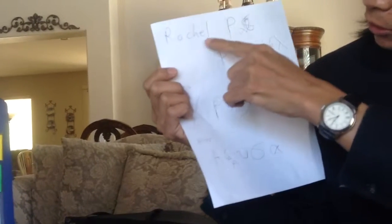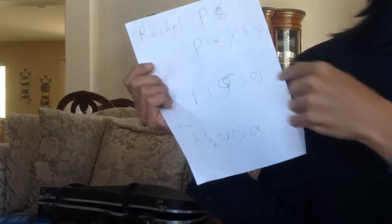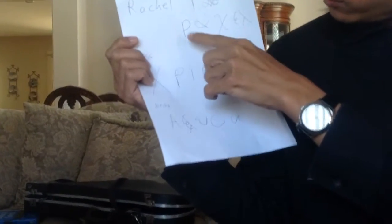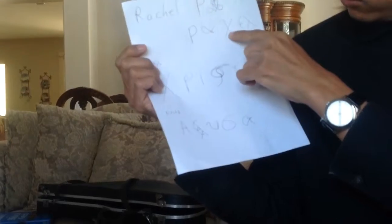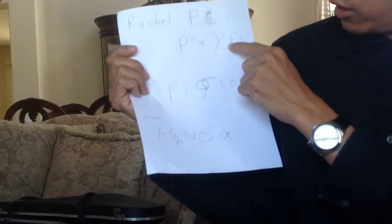So Rachel — R-A-C-H-E-L: the 'ch' is the letter he, which makes the 'ha' sound, so it would actually be pronounced 'Rechel,' just like in Hebrew. So in Greek letters it's rho, alpha, he, epsilon, lambda.